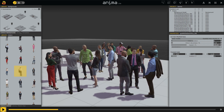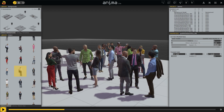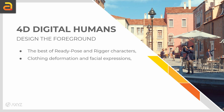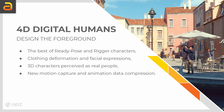It's time to talk about the next step in 3D animated actors. Anima Pro 4D brings a brand new animation system that turns 3D characters into real humans. This feature embeds the best of ready posed and rigged characters by preserving all the details of the clothing and facial animations that provide unattainable realism. A new animation system has been introduced to let 3D characters be perceived as real people. Moreover, a new motion capture and animation data compression algorithm have been developed.